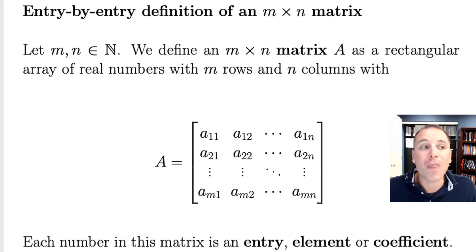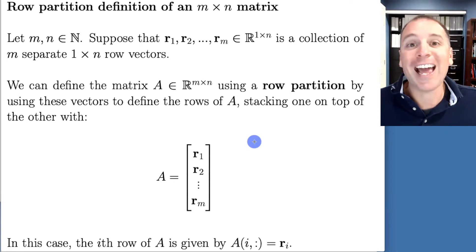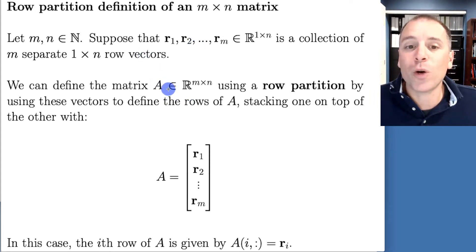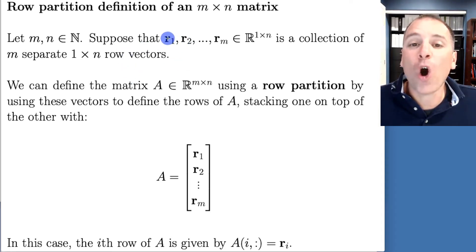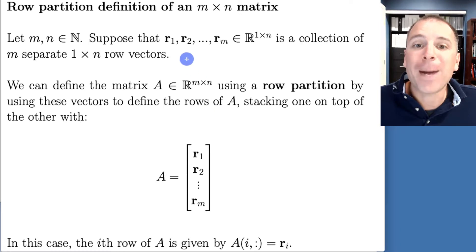We'll start by looking at the row partition of A. The difference between the entry-by-entry definition and the row partition definition is that in the row partition, instead of specifying matrix A using individual entries, we define A based on a collection of predefined row vectors. To define an M-by-N matrix, suppose we already have a list of M different row vectors, each one having one row and N columns. We can define A by stacking those row vectors one on top of the other.